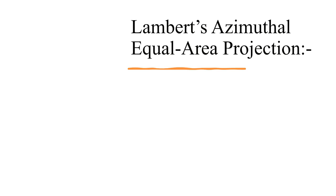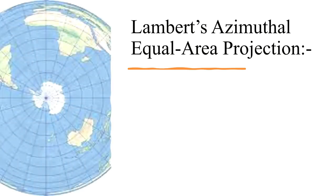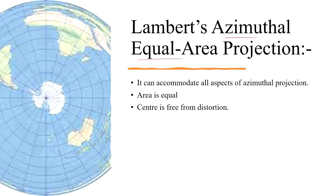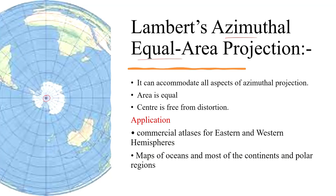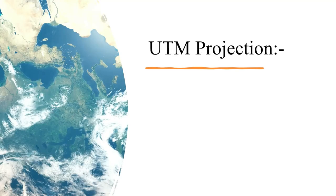Next we come to Lambert's azimuthal equal-area projection. From the name we know it is mainly an azimuthal projection system. Its characteristics are: it is an azimuthal projection, the area is equal, and the center is free from distortion. The application of this projection is for eastern and western hemispheres, maps of oceans, most continents, and polar regions — all use this equal-area projection.